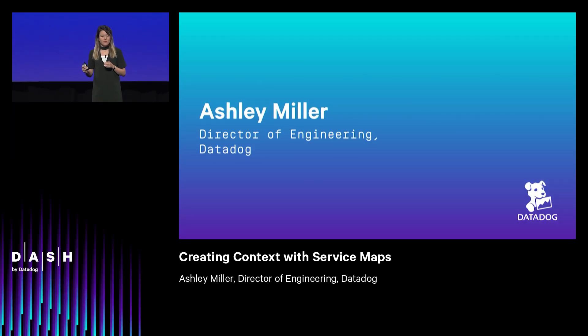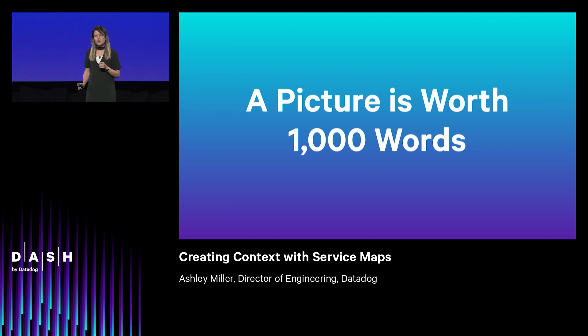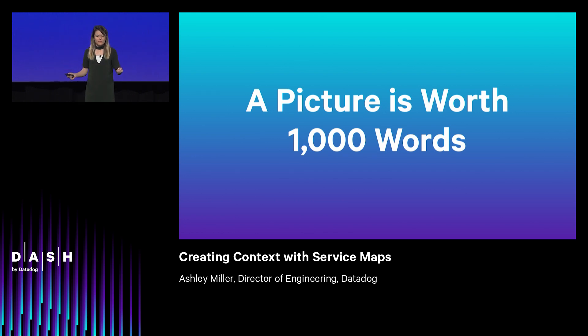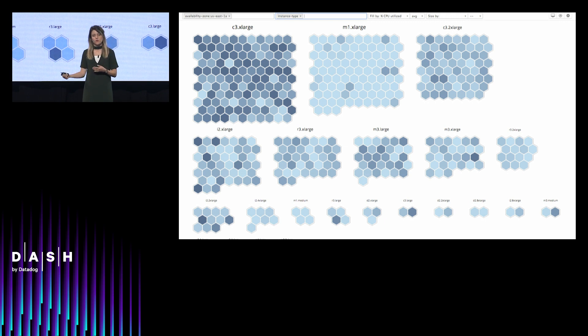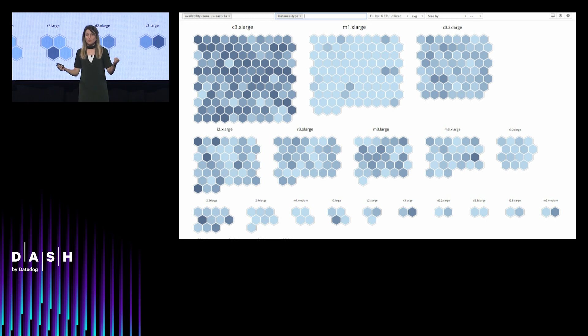I'm here to tell you about a way that Datadog is going to help you manage complexity in your services in a very particular way — visually. Because at Datadog, we believe a picture is worth a thousand words. A smart visualization can help you grok a complex system in just a second. Things like the host map, which many of you are familiar with — it shows you where your hosts and containers are deployed in a second. And like many things Datadog does, it just works.